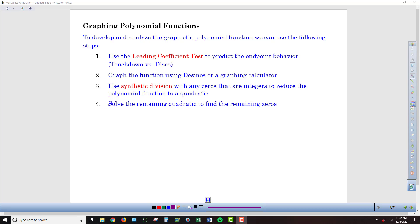To start off with, when we're given a polynomial function, we want to first generate some expectations as to what that graph should look like using our leading coefficient test. This is basically determining whether it's going to be a touchdown or a disco graph, whether the two sides are going to be both up or both down in the case of a touchdown graph, or which side is going to be up and which side is going to be down in the case of a disco graph.